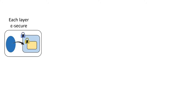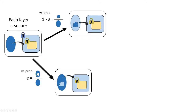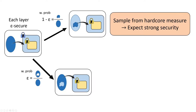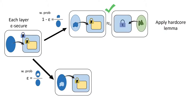In our nested encryption security game, we assume each layer is epsilon-secure, meaning the adversary's distinguishing advantage is at most epsilon. Normally, we sample the randomness for the blue encryption from uniform randomness. This is equivalent to sampling from the hardcore measure of the blue encryption with probability proportional to its density — that is, probability one minus epsilon — and sampling from the complement with probability epsilon. When we sample from the hardcore of the blue encryption, we expect strong security, so we should be able to swap out the blue encryption for an encryption of zero. The hardcore theorem states that the outer blue encryption in this case is strongly indistinguishable from an encryption of zero. Since we have replaced the blue encryption with an encryption of zero, we now have security, as we have lost all information about the yellow encryption and our message.